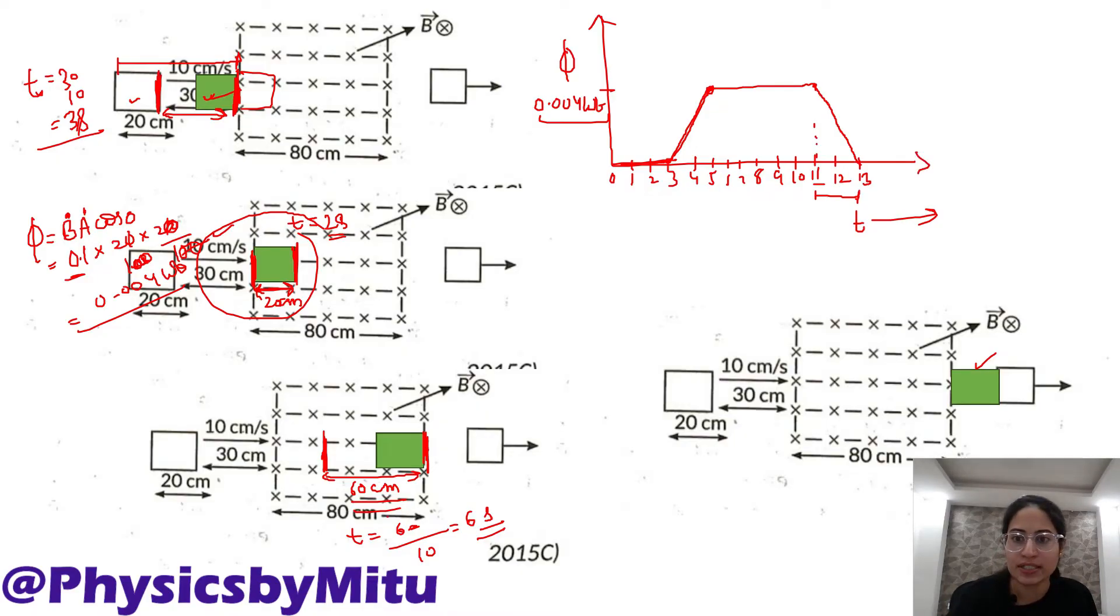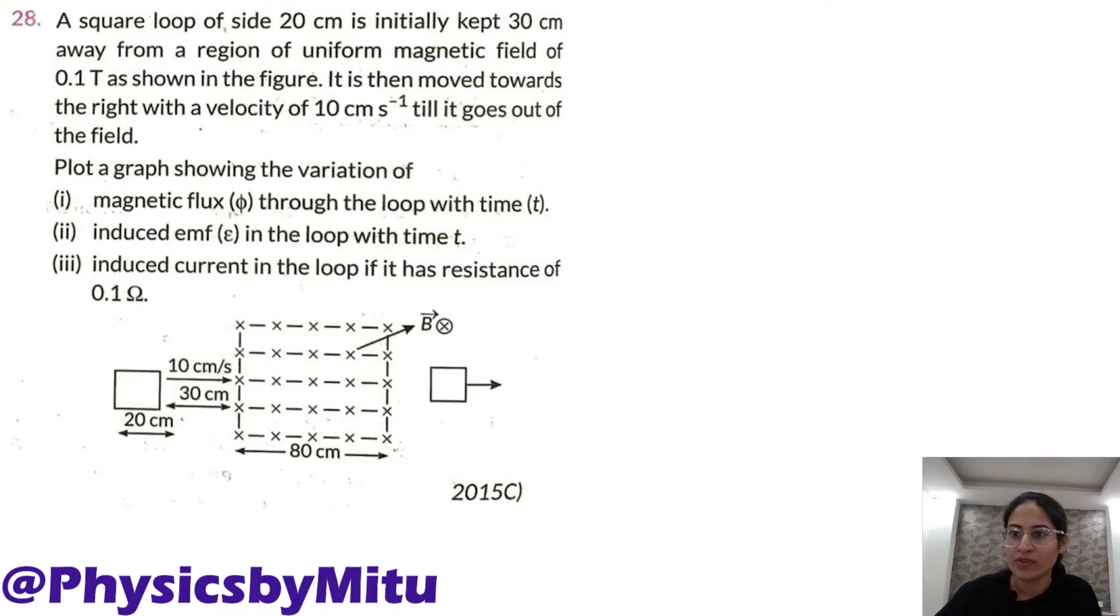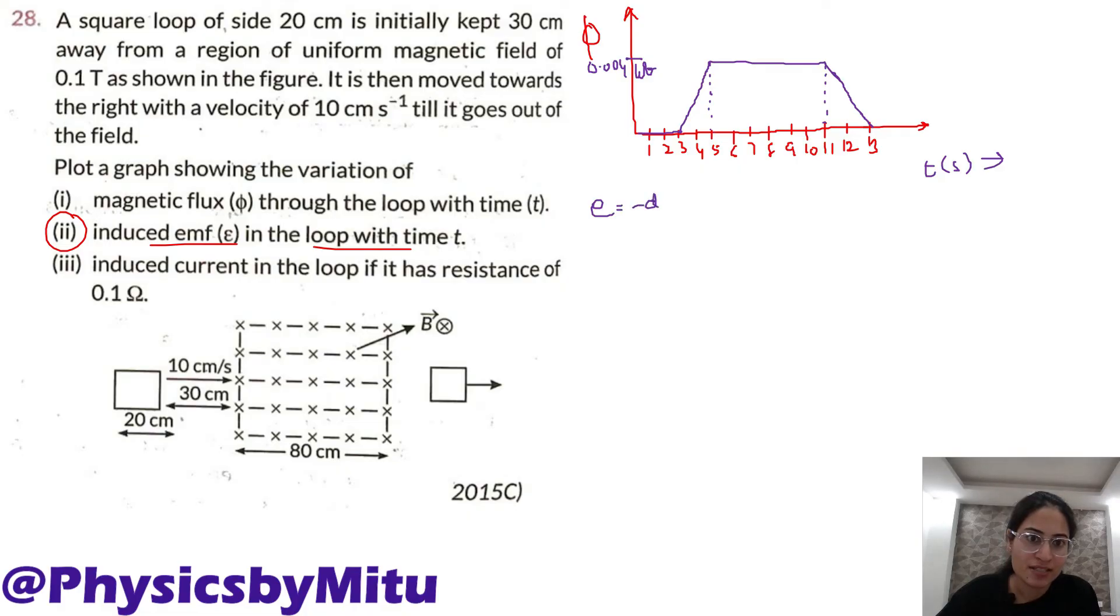Now second part is you have to plot graph of induced EMF versus time t. Flux ka ek baar phir se draw kar lete hain, flux versus time. This is the graph of flux versus time. Now induced EMF is minus dΦ by dt. From 0 to 3 seconds, flux is 0, so EMF will be 0.